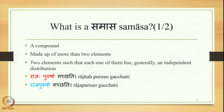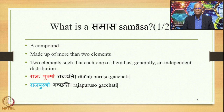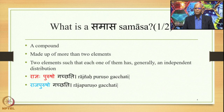Radnaya Purusho Gacchati — this is a sentence having three words, an Eka Vaakya with three Padas. The same meaning can also be stated by bringing together Radnaya and Purusha, giving us Raja Purusho Gacchati. So Raja Purusha is a compound. In the sentence Radnaya Purusho Gacchati, the two elements — Radnaya and Purusha — have independent distribution.